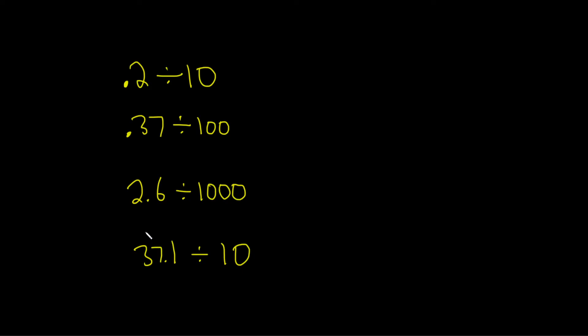In this video, I'm going to show you how to divide by moving the decimal point. Basically, whenever you divide by 10, 100, 1,000, or even 10,000, you move the decimal point to the left for however many zeros you have.